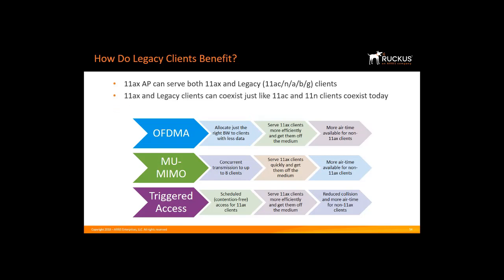Second, 11ax and legacy clients can coexist, just like 11ac and 11n clients today. Third, both 11ax and non-11ax clients benefit. 11ax clients will be more efficient and free up more spectrum for 11ac clients. This is like the carpool lane — the first two lanes are for our 11ax devices. If 50% of the devices are 11ac and 50% are 11ax, I put all the 11ax devices in the carpool lane, which makes them work more efficiently, and the remaining 11ac clients benefit because taking half the cars from all the lanes frees up contention for the 11ac devices.